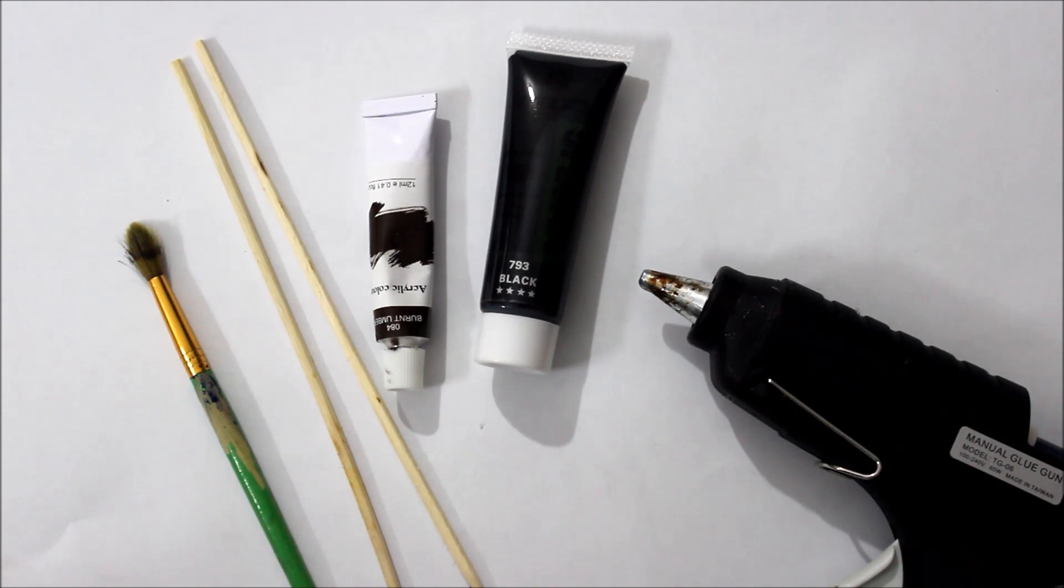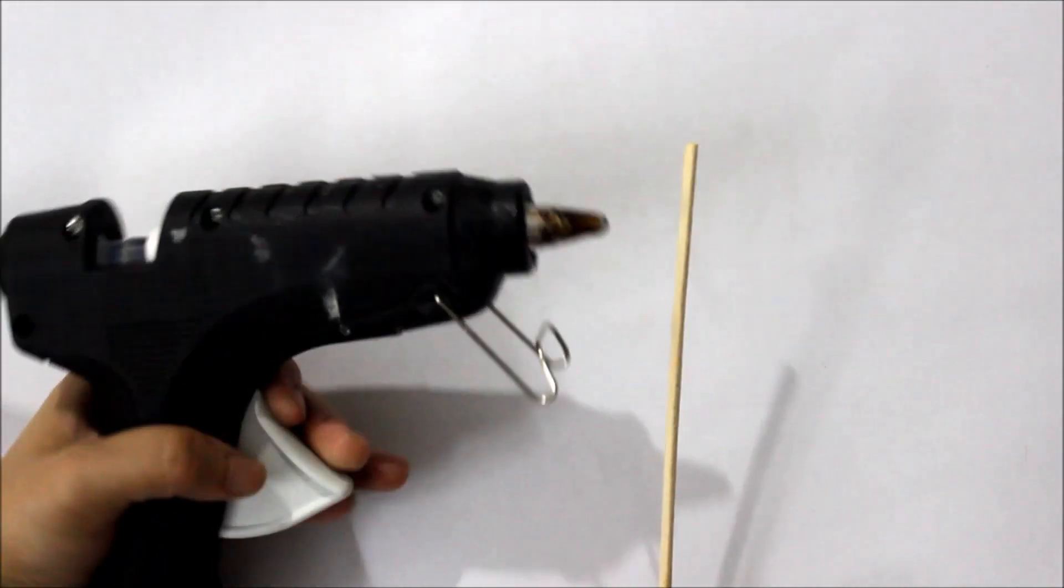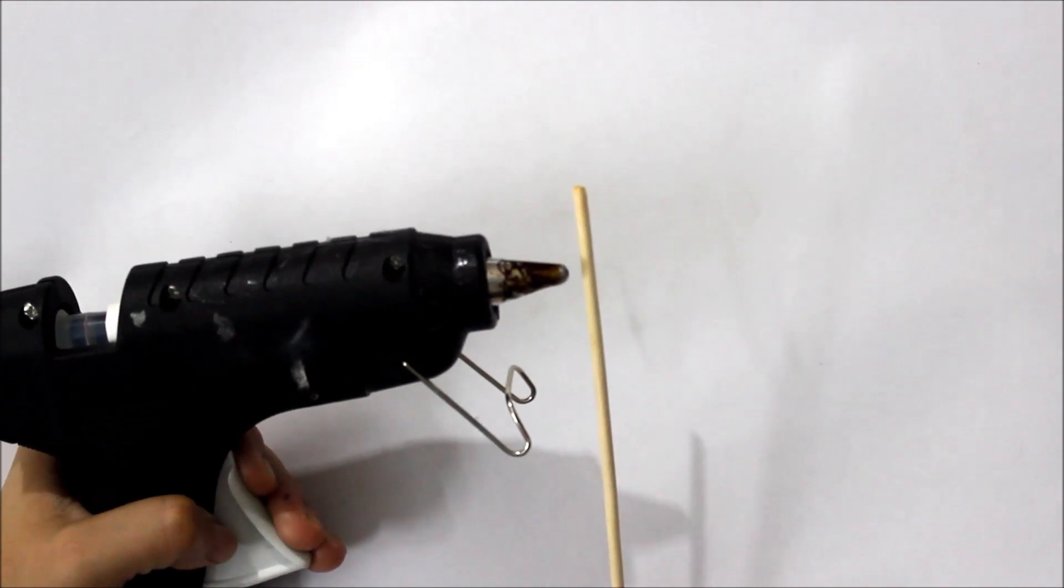The supplies you'll be needing: a hot glue gun, chopsticks, a paintbrush, and black and brown acrylic. Step one, take your hot glue gun and cover the stock part of the stick with hot glue.